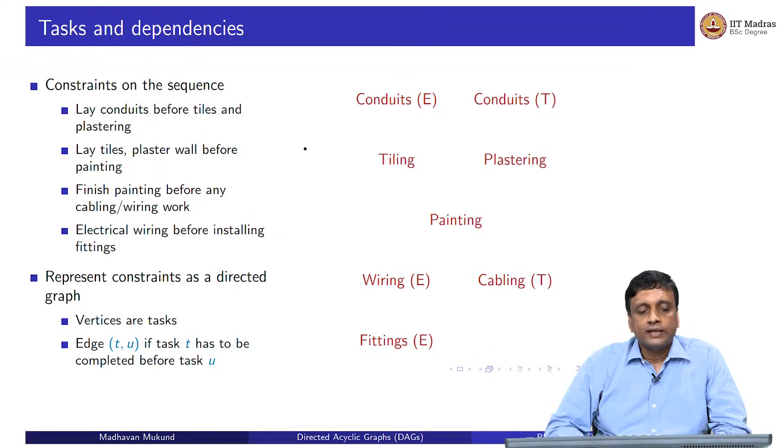We have these various tasks: conduits, tiling, plastering, cabling, wiring and so on. Now the constraint, the first constraint says lay the conduits before the tiles and plastering is done. And there are two types of conduits: the electrical conduits and telecom conduits. Both the electrical conduits and the telecom conduits have to be done before the tiling and the plastering is done.